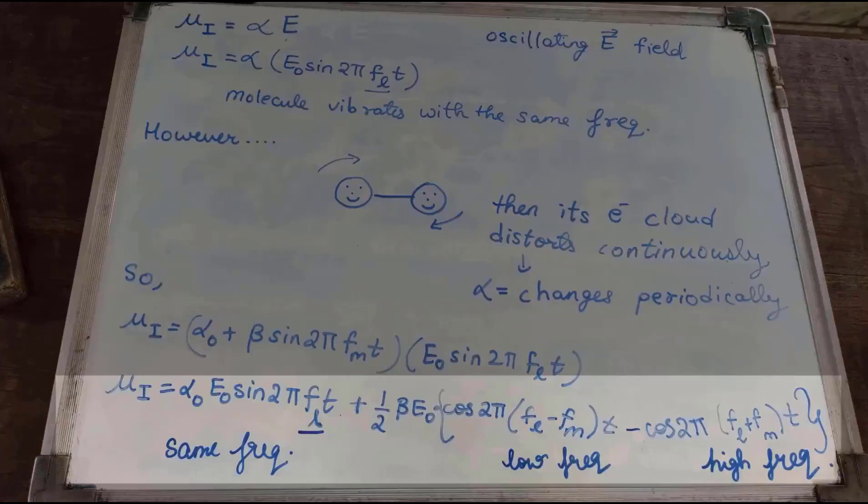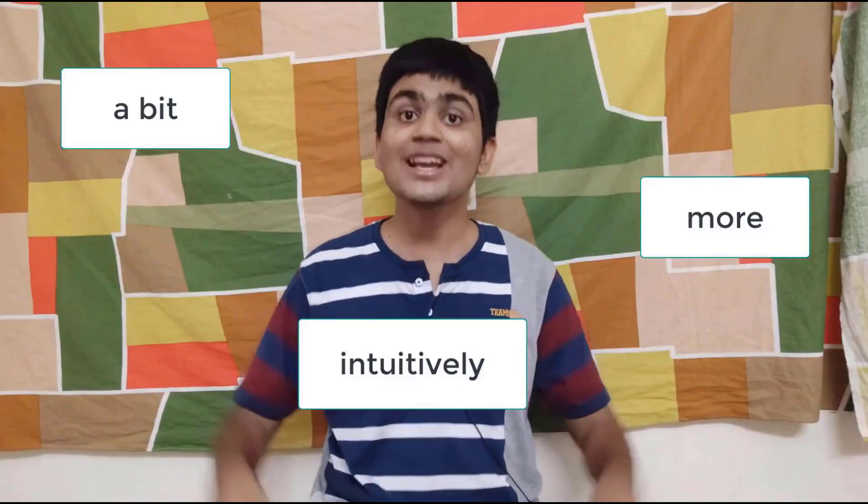The three terms in the equation correspond to the three types of light emitted by the molecule. To understand this more intuitively, we need some basketballs.